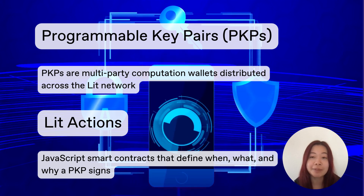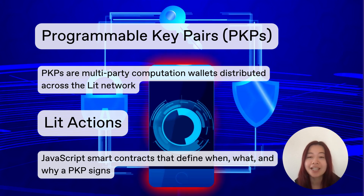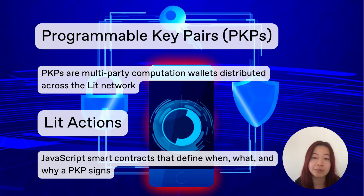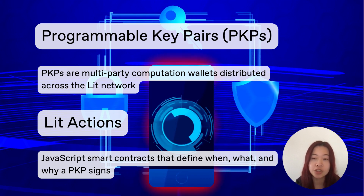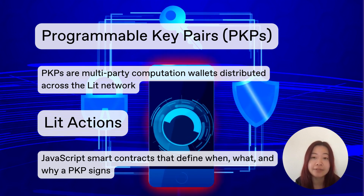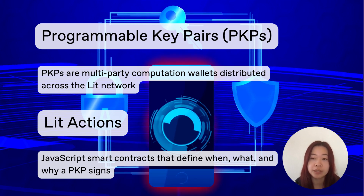The private-public key pairs are the programmable key pairs, and you'll be able to write conditions with LIT actions and then sign those conditions with the programmable key pairs.